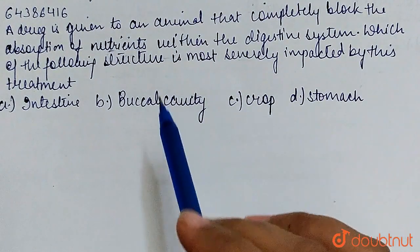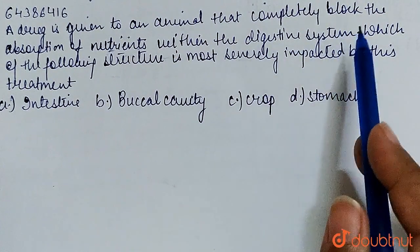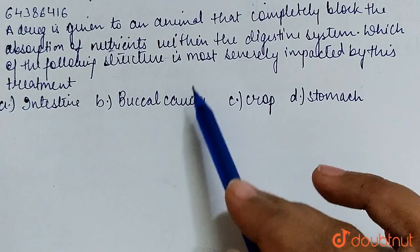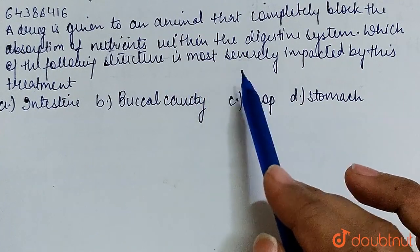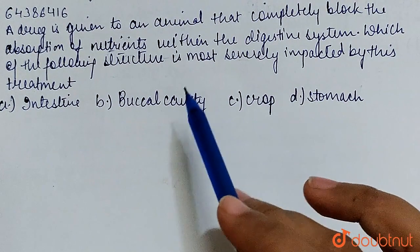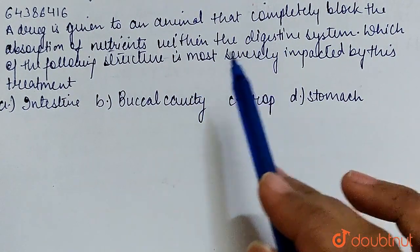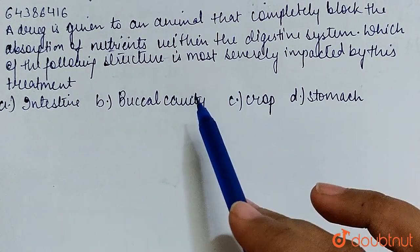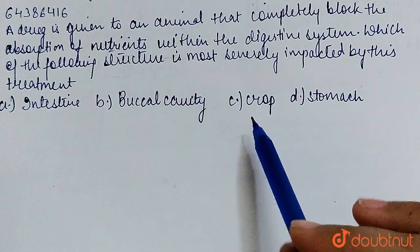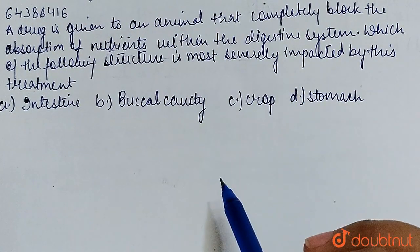Hello friends, welcome. So the question is: a drug is given to an animal that completely blocks the absorption of nutrients within the digestive system. Which of the following structures is most severely impacted by this treatment? Here we are told that a drug completely blocks the absorption of nutrients within the digestive system, and we need to identify which organ is severely impacted from the given options.